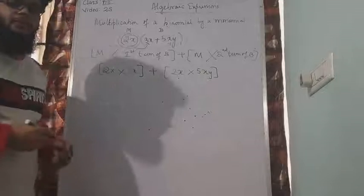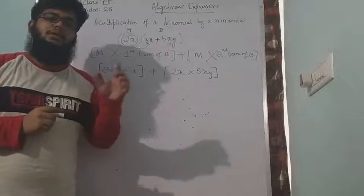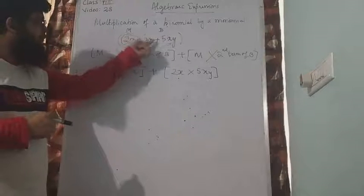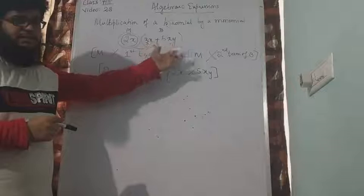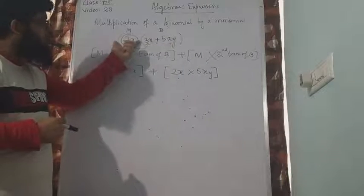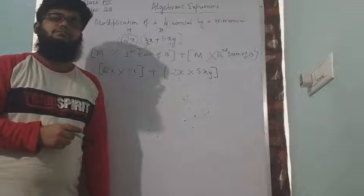So what is the rule? When you multiply a monomial by a binomial, we take monomial into first term of the binomial, plus sign or minus, again monomial with the second term of the binomial. Is that understood?